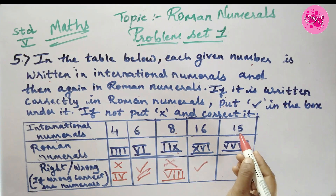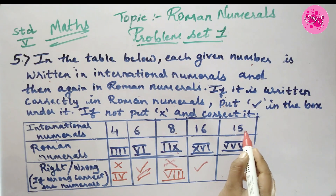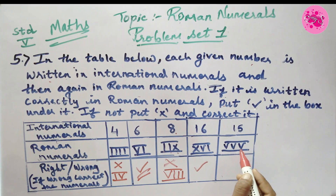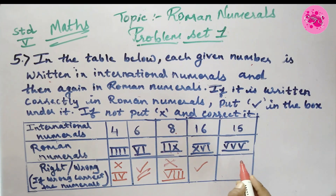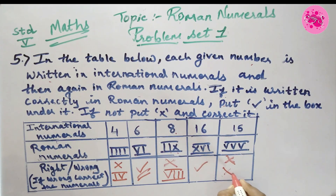Number 5: International numeral 15, and the Roman numeral VVV (three V's) is given. But we never write 15 like this in Roman numerals, so it is wrong. Instead, we write it as XV (X and V).